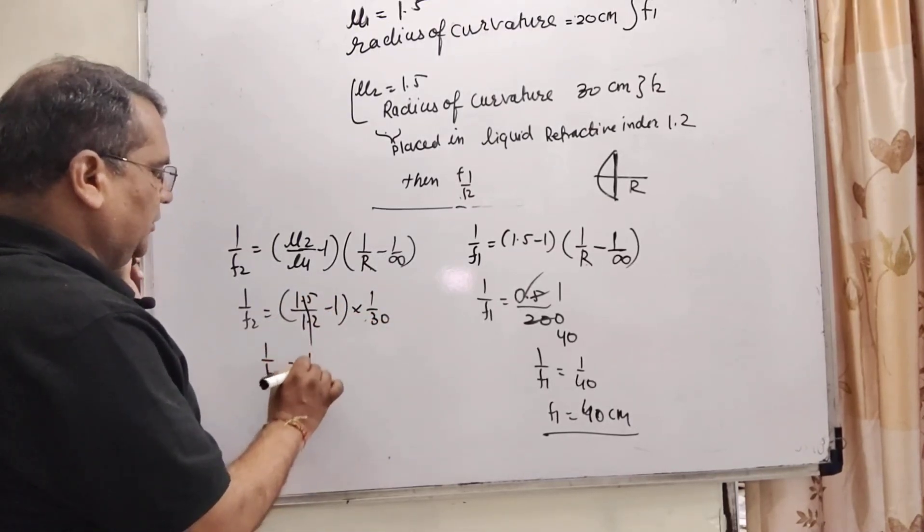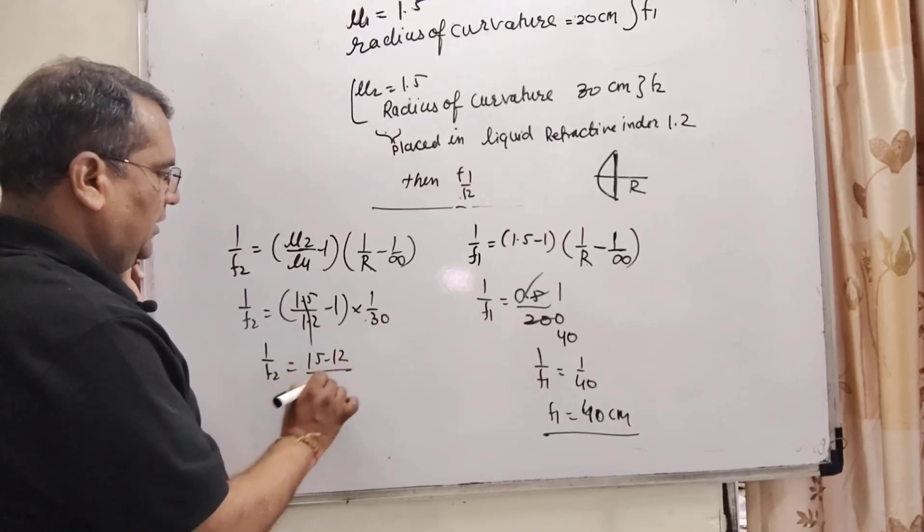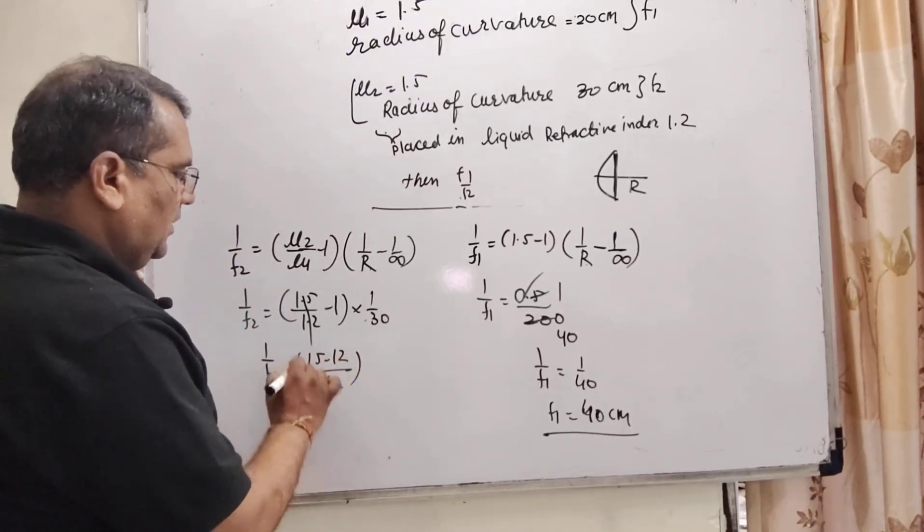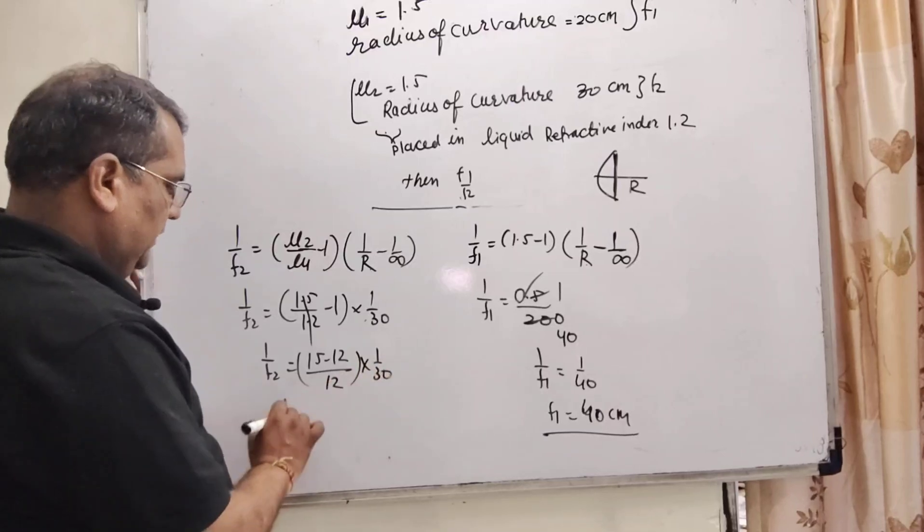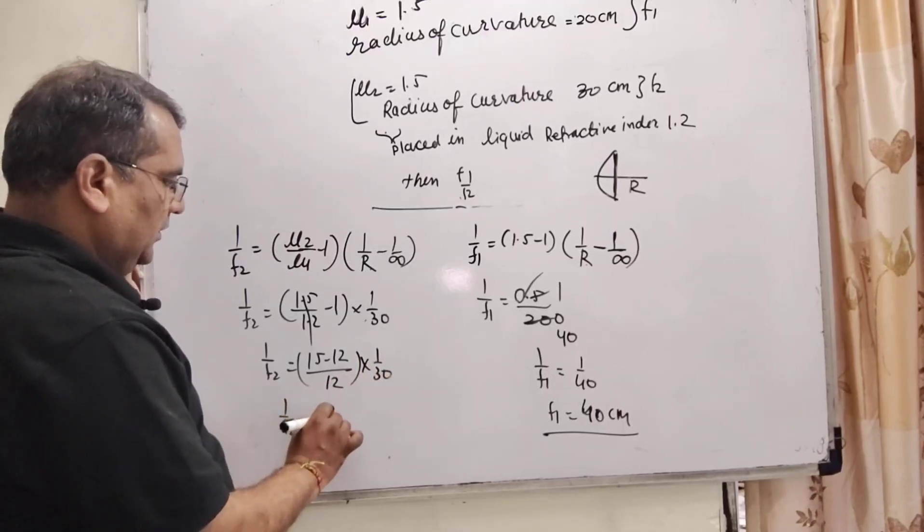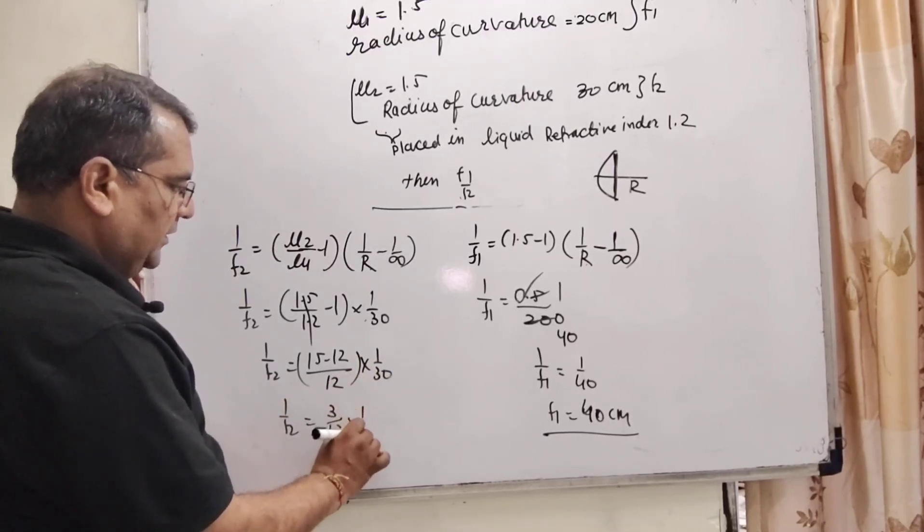1 by f2 is equal to 15 minus 12 upon 12 into 1 by 30. That is 3 by 12, 1 by 30.